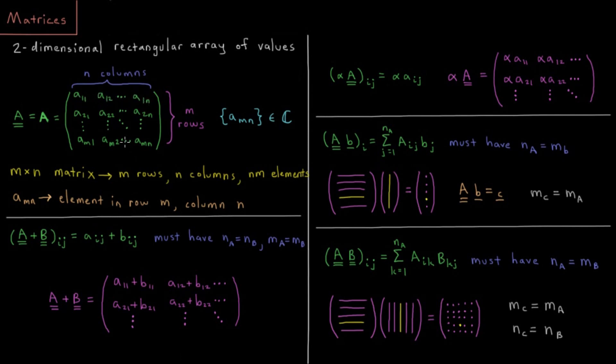In general some matrix will have M rows, N columns, and it'll have N times M total number of elements. So M sub N is the element in row M and column N.